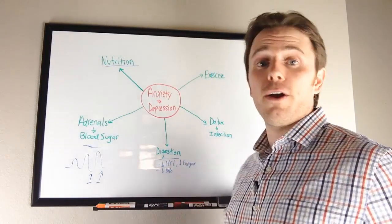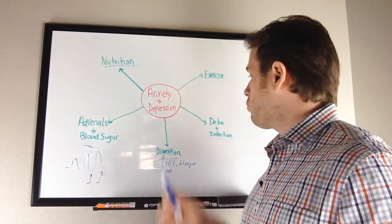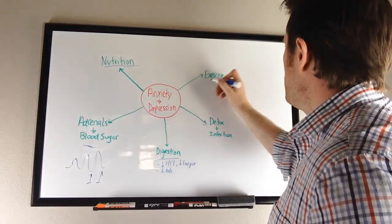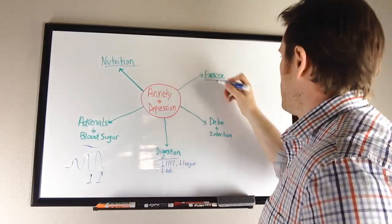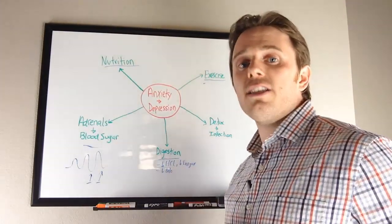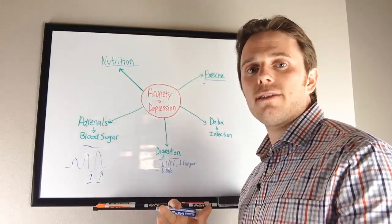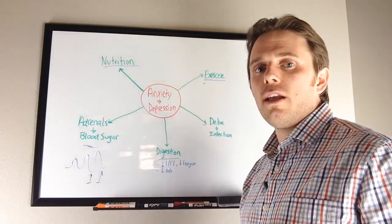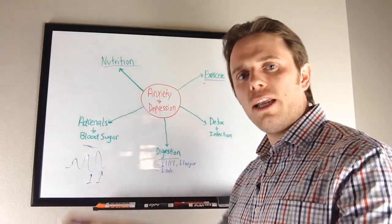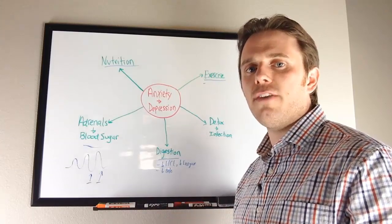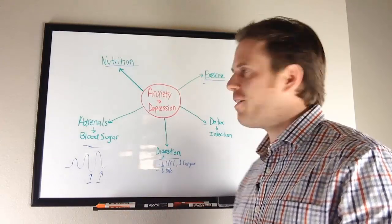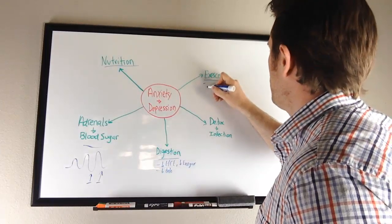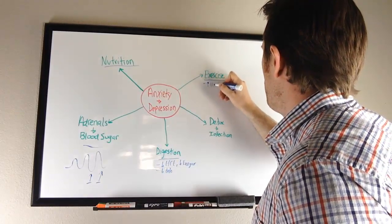Exercise—what does exercise do? A couple things that are really important: if you're doing the right kinds of exercise—high intensity, Tabata-style interval, burst-style, if you're doing some type of circuit training resistance-wise, maybe a CrossFit if you can handle it, if your adrenals are strong enough—exercise is going to increase growth hormone.